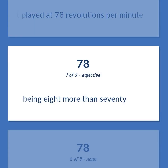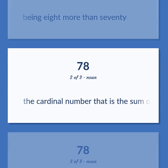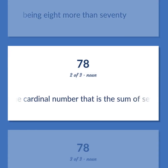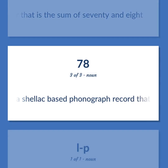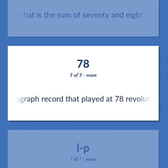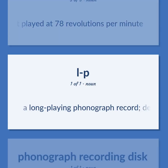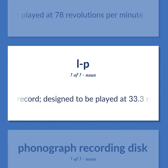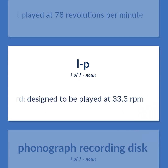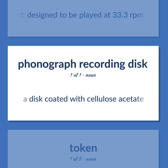A shellac-based phonograph record that played at 78 revolutions per minute. A disc coated with cellulose acetate. A long-playing phonograph record designed to be played at 33.3 revolutions per minute.